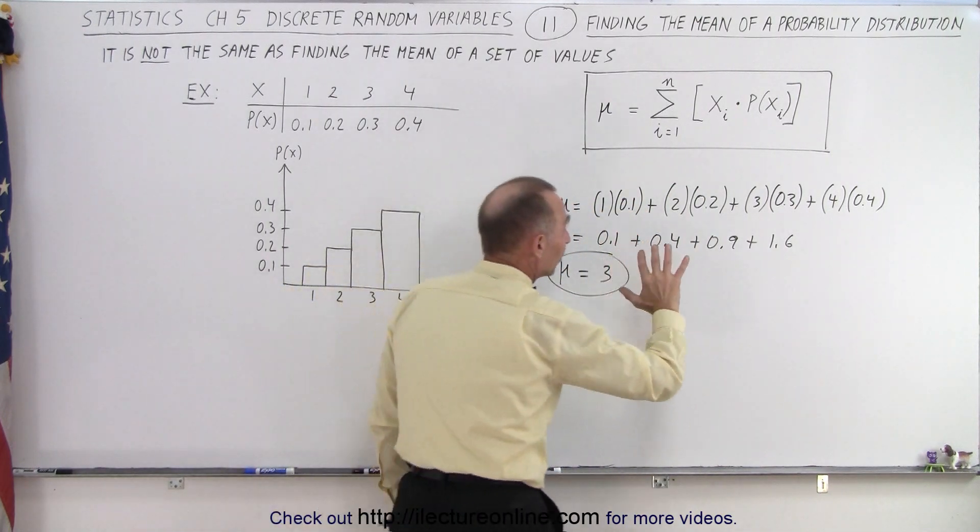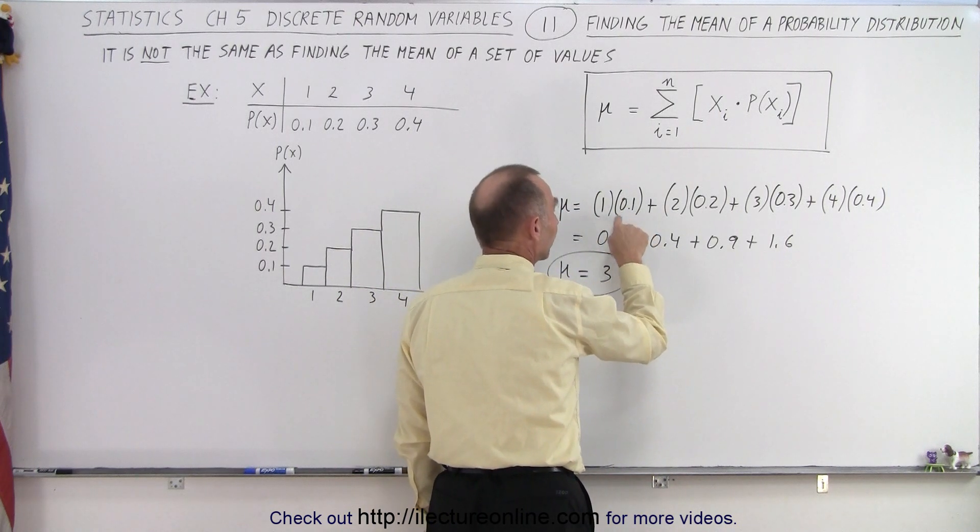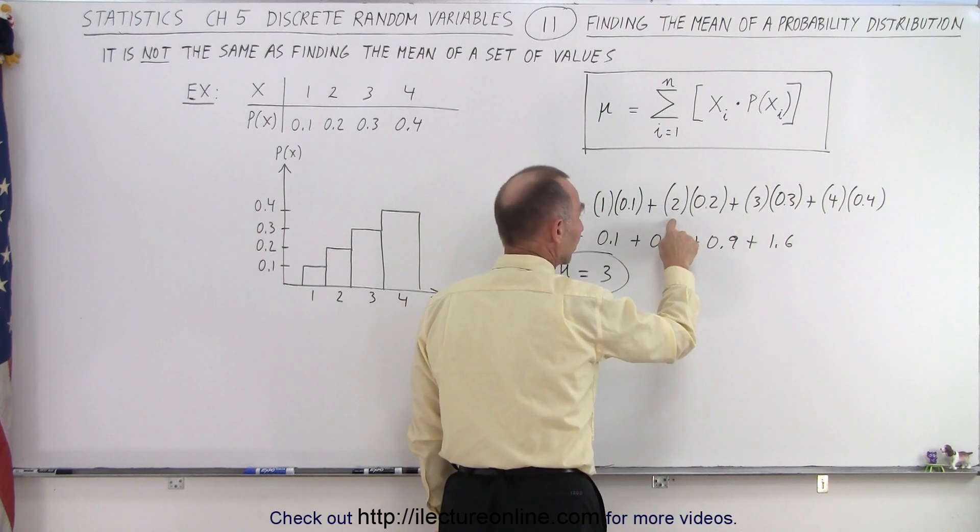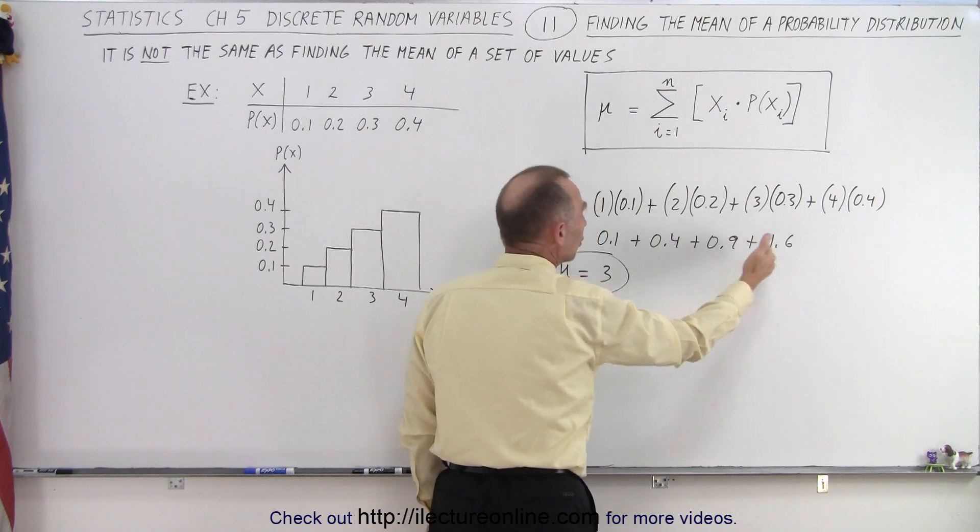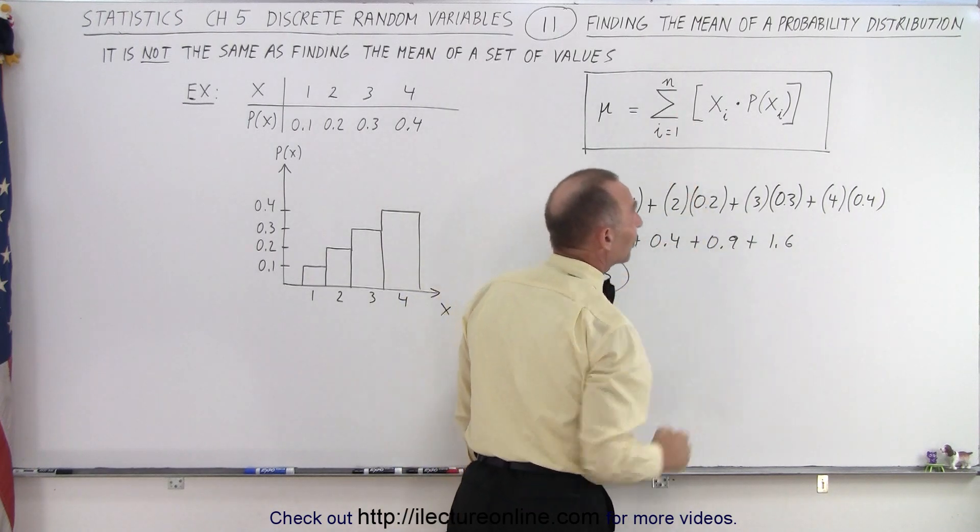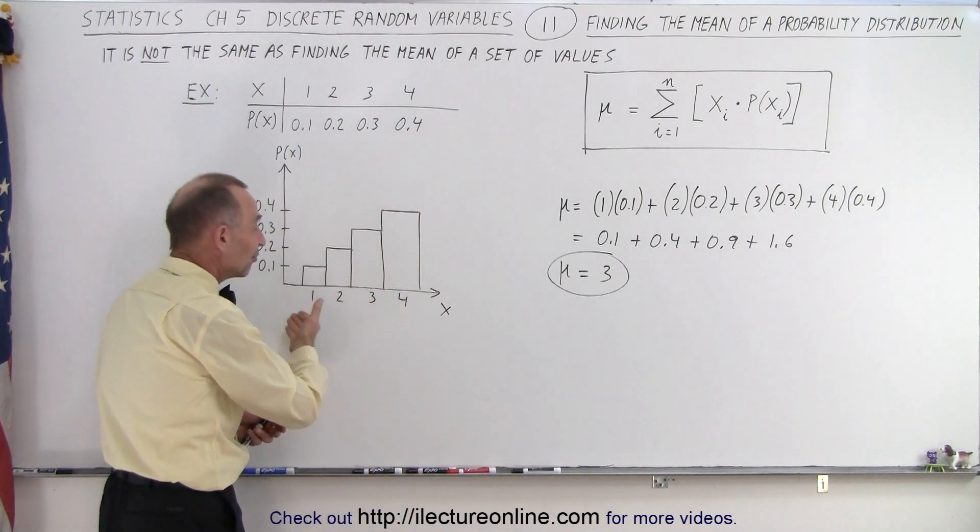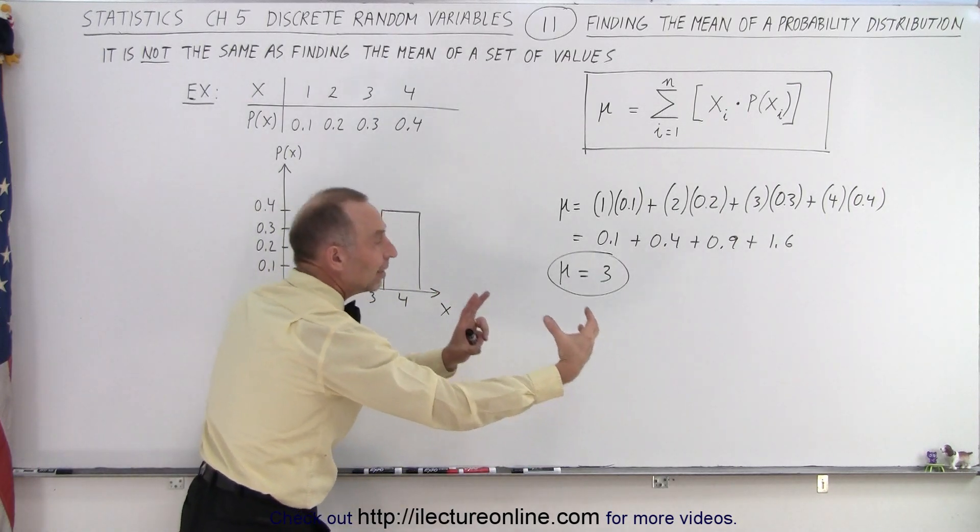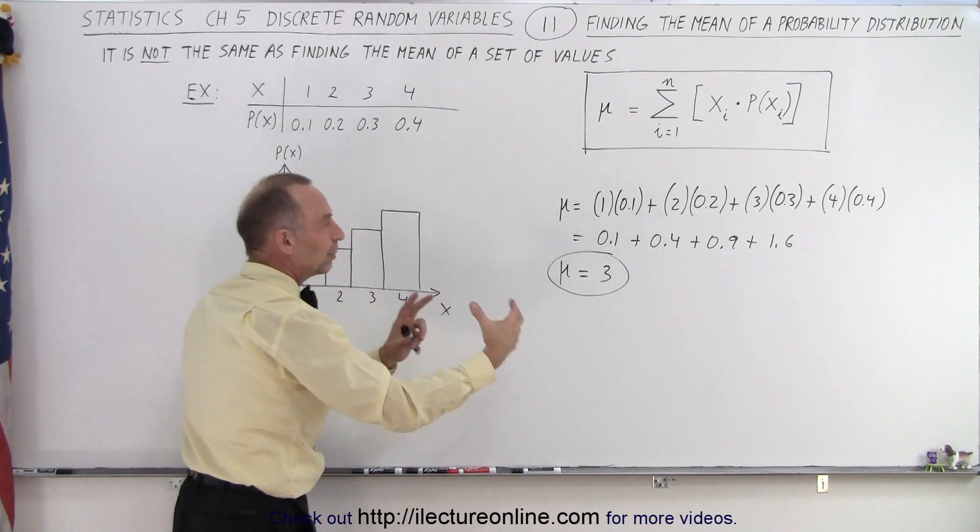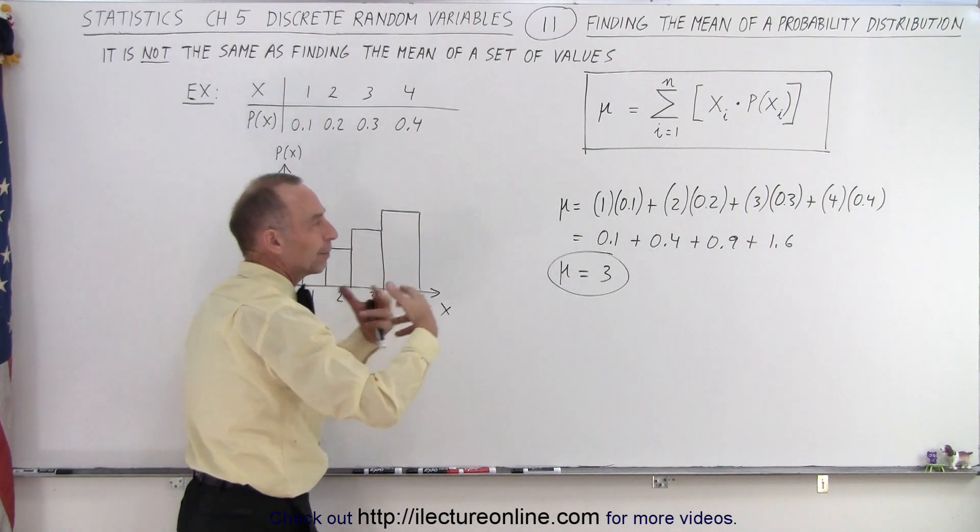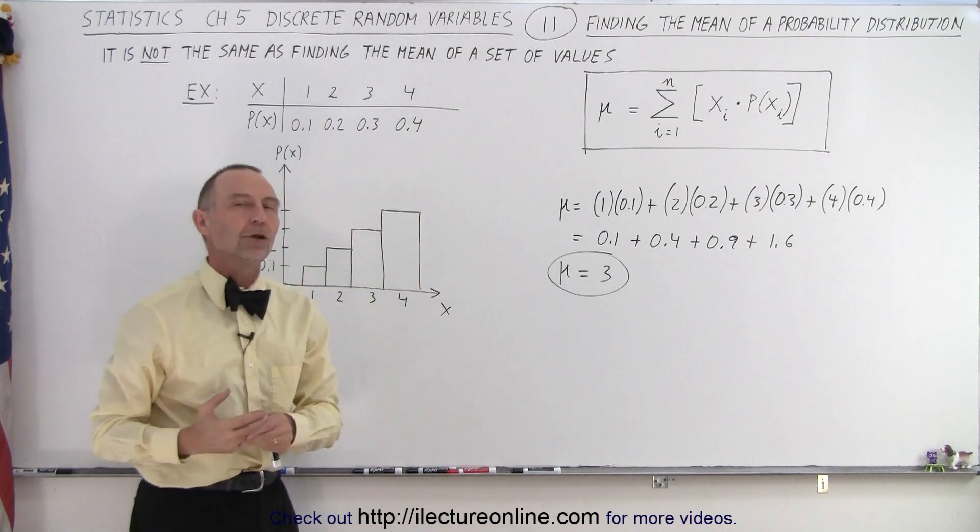Now if the probabilities were reversed, if it was 0.4 for x equals 1 and 0.3 for x equals 2 and so forth, you would see that the mean of the probability distribution would be a smaller number and again it would be smaller than the average values for x because then the probability that x would be a smaller number is greater than the probability that x will be a larger number.